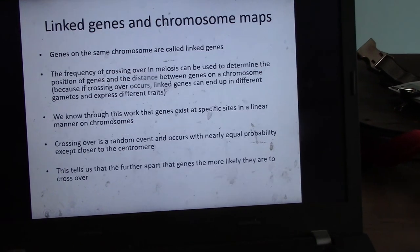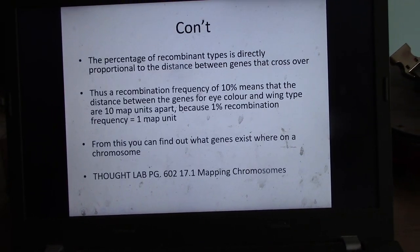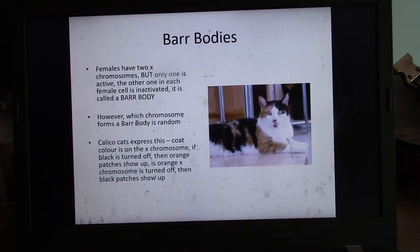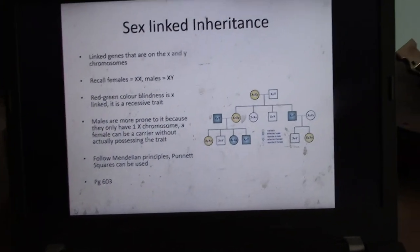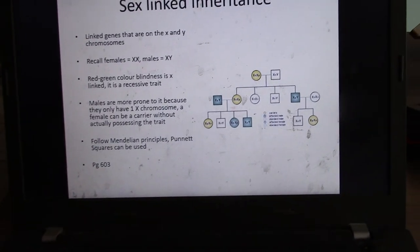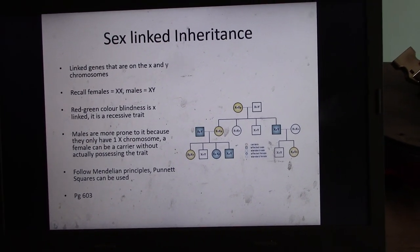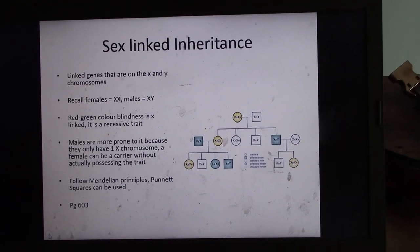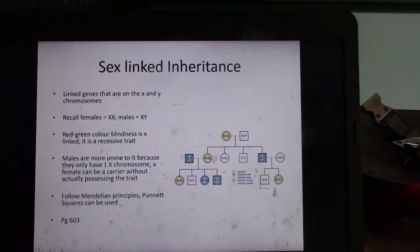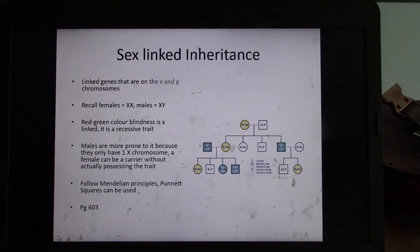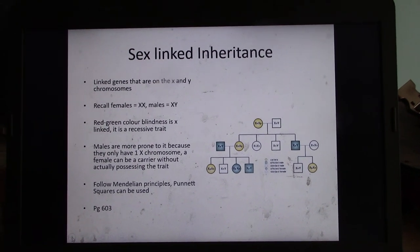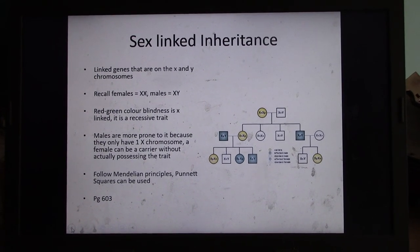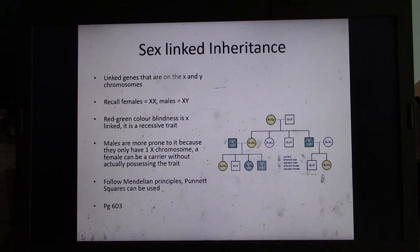So you need to know the difference between co and incomplete. So co is when both traits are expressed equally, and incomplete is when a blending occurs. This is going to be the last thing I talk about, gene linkage. I'm going to talk about blood typing and X-linked inheritance in this lecture as well. I'm going to stop this lecture right now and continue on with a new video. And I'll give you some more examples once I continue this. So I'm going to sign off for now and I'm going to continue this lecture after I've downloaded this piece of information. Bye for now.